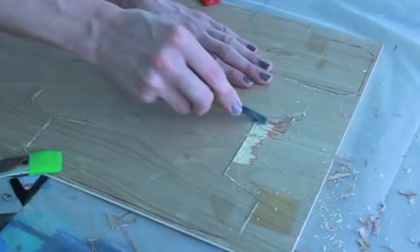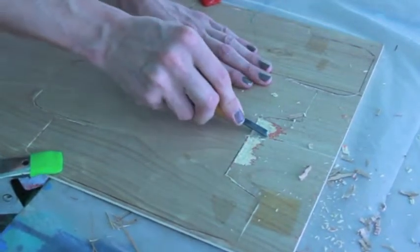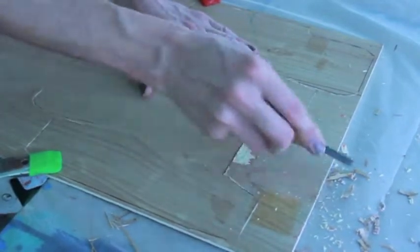So any time that you glue anything, whether you're gluing paper or you're gluing wood together, you always want to glue them across grain because it's going to give you the strongest bond.